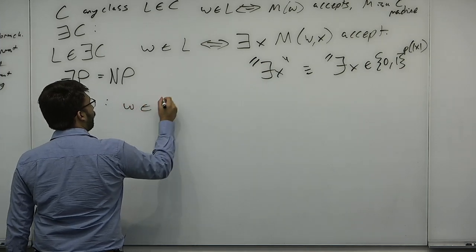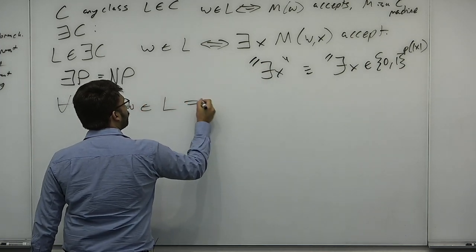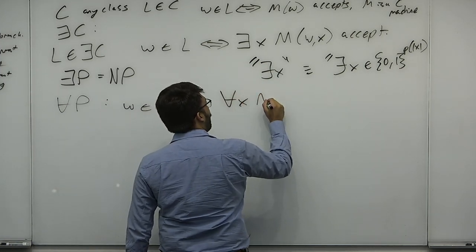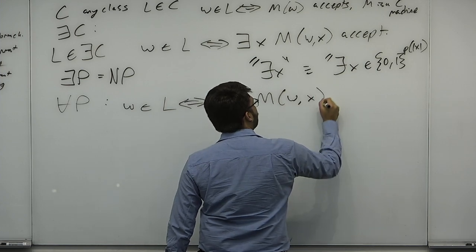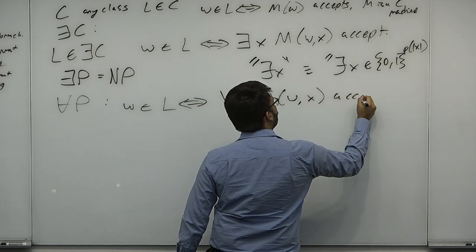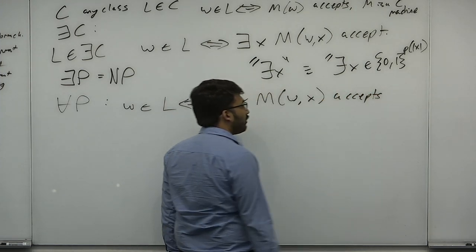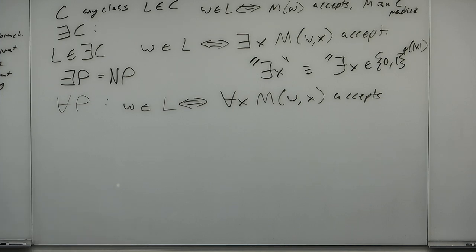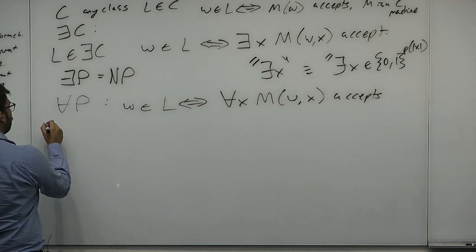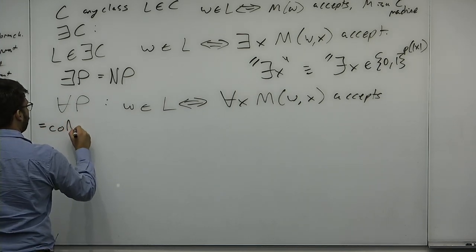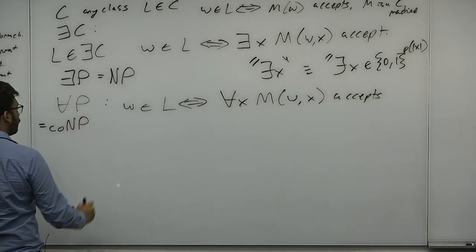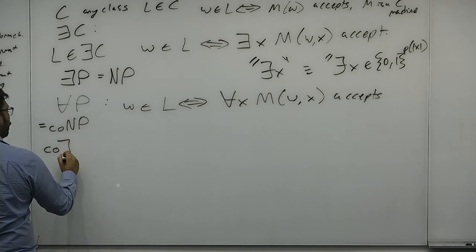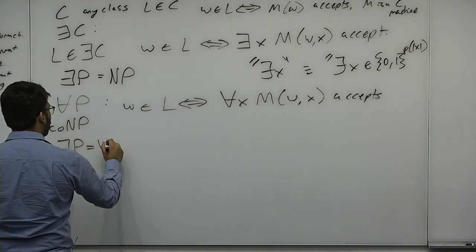For-all-P is similarly defined: W is in L if and only if for all X, M on WX accepts. What is For-all-P? It's co-NP. Let's prove it: co-Exist-P equals For-all-P. Something is in co-Exist-P if it's not in Exist-P. So W is not in L if and only if there does not exist X such that M on WX accepts.